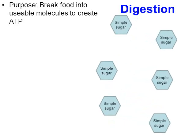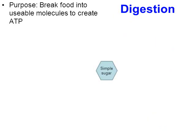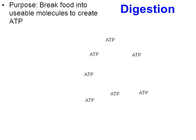Through digestion, that complex sugar gets broken down into its simple sugar components. If we focus on one simple sugar — for instance, glucose — through the breakdown of glucose, ATP is going to be created.